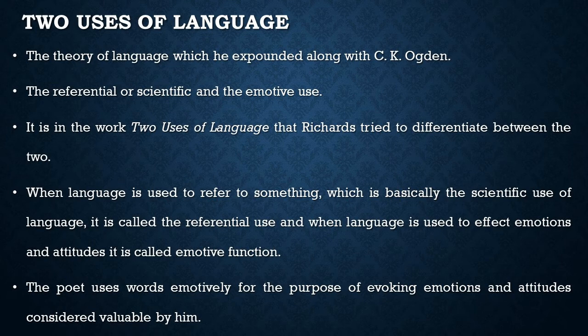The second contribution is the two uses of language, which he expounded along with C.K. Ogden, yet another British writer and linguist. They distinguished between two uses of language: the referential or scientific, and the emotive. It is in the work Two Uses of Language that Richards tried to differentiate between the two.